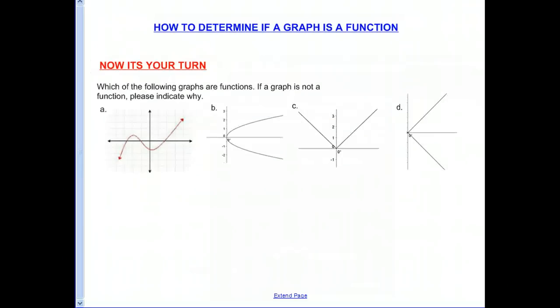So let's do some practice, because now it's your turn. So there's four graphs here. What you're going to need to do is pause the screencast, copy these graphs down onto a piece of paper, and then decide if the graph is a function or not. And if the graph is not a function, please indicate why. Clearly, you want to use the vertical line test to decide if the graph is a function or not. I hope this is clear to you. Good luck, and see you again next time.